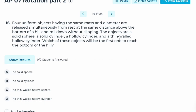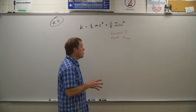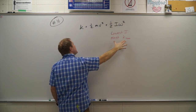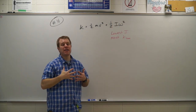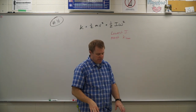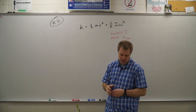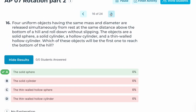Number sixteen: four uniform objects — solid sphere, solid cylinder, hollow cylinder, and thin-walled hollow cylinder — all with the same mass and diameter are released from rest at the same height and roll down without slipping. Which reaches the bottom first? The object with the lowest moment of inertia requires the least energy for rotation, leaving the most translational kinetic energy. The solid sphere has the lowest I value, so it moves the fastest. Correct answer: A.